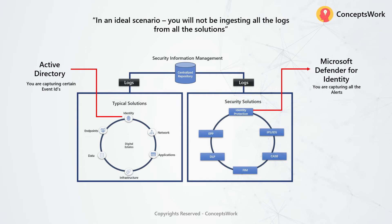In an ideal scenario you will not be ingesting all logs from all solutions. For example, when there is a bad password attempt for a specific user account, Active Directory generates an event with a specific event ID. You may want to capture these logs to detect brute force attempts. But for an identity protection solution, you may want to ingest all alerts — low, medium, high, or critical. Data ingestion requires effective planning before you proceed.